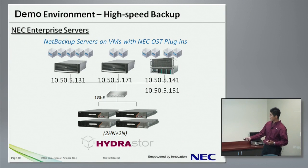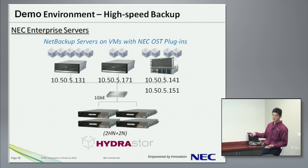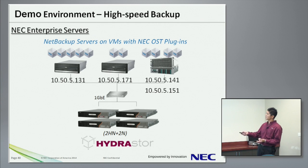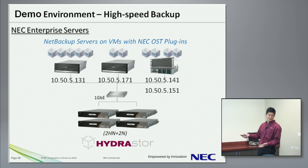Let me briefly explain the environment. This is the highest store we have in the lab right now for this demo. We have two hybrid nodes and the other nodes are storage nodes. We have three NEC enterprise servers — one is the latest version (CX) and one is the previous version (GX). We installed VMware ESXi. We have five VMs on one server, two VMs and four VMs on others. This server has two partitions, so each partition has two VMs. Those VMs are NetBackup Media Servers — we needed that number to generate high performance using our OST technology.